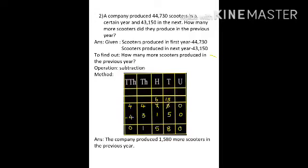In the units column, 0 minus 0 is 0. Now 3 minus 5 is not possible because 3 is smaller than 5, so we borrow 1 from the 100s place — 3 becomes 13, and 13 minus 5 is 8. In the 100s column, 6 minus 1 is 5. In the 1,000s column, 4 minus 3 is 1. And in the 10,000s column, 4 minus 4 is 0. So the answer is the company produced 1,580 more scooters in the previous year.